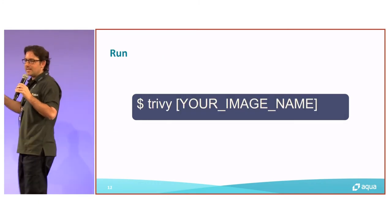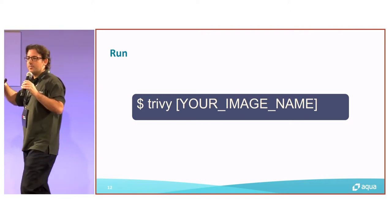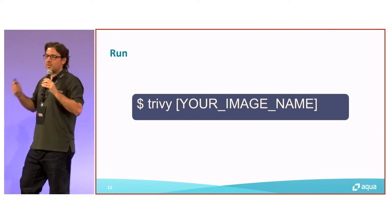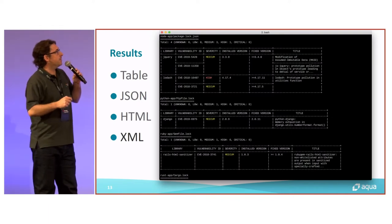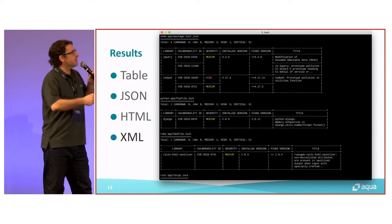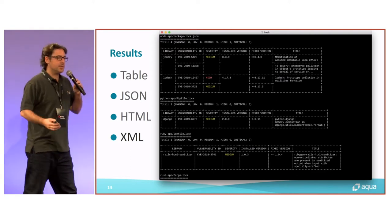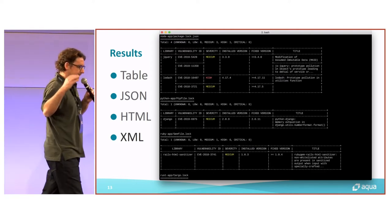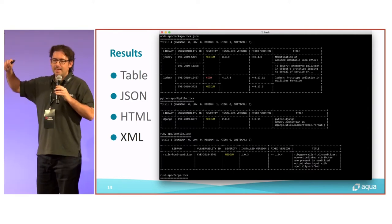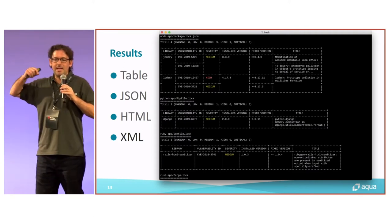How do you run it? As you can see here it's dead easy — just trivy and the image name. You can give it parameters like only show me critical vulnerabilities, or only show me high severity vulnerabilities, and it will show you what you need to do to remediate as well. Here's an example of a report — there's a Python and an NPM vulnerability. For each one, it gives you the installed version in your image, the fixed version you need to use to remediate. The report can be generated as JSON, HTML, and it's really nice — again, allowing the DevOps people creating the images to take control of security.